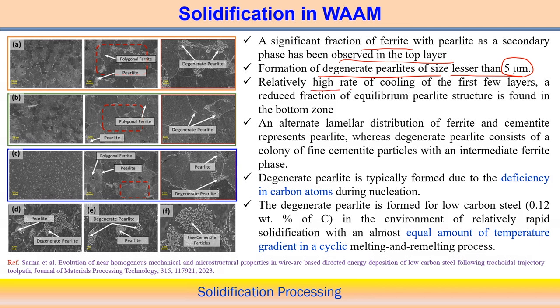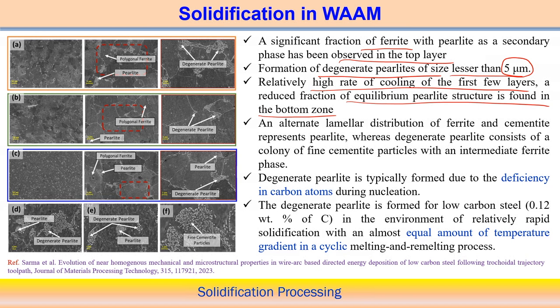A high cooling rate occurs in the first few layers, and therefore a reduced fraction of equilibrium pearlite structure is found in the bottom zone. Usually, a higher cooling rate occurs in the first few layers compared to later layers, with the cooling rate gradually decreasing as more layers are added. A reduced fraction of pearlite structure is observed in this bottom zone.